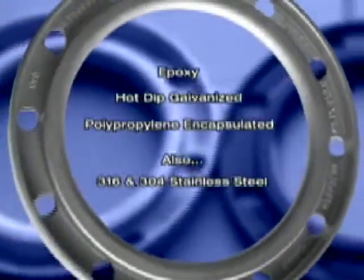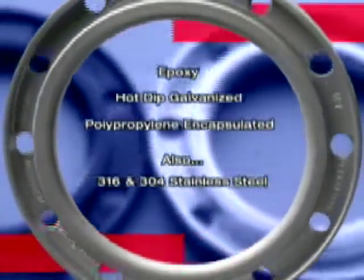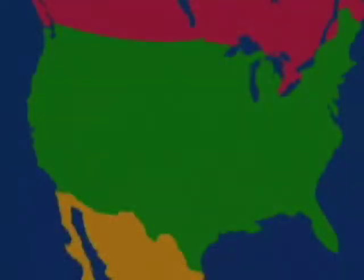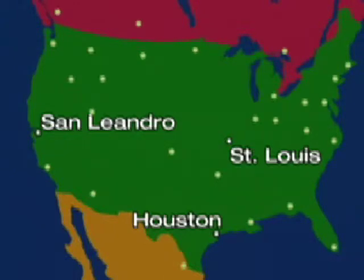They are also available in 316 and 304 stainless steel for highly corrosive applications. Our warehouses are conveniently located in San Leandro, California, Houston, Texas, and St. Louis, Missouri. Or you can get DeltaFlex from any one of our hundreds of distributors nationwide.